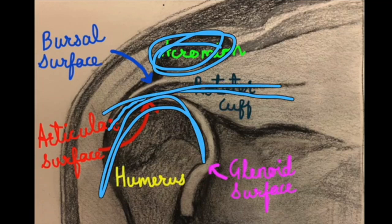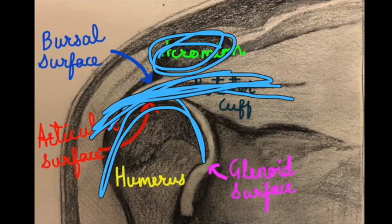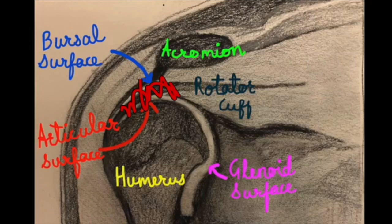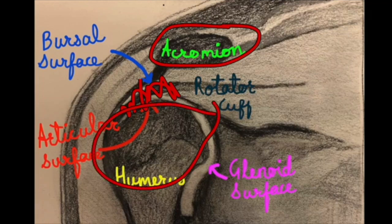And this is the direction of the rotator cuff muscle. Oftentimes the impingement can happen right at this region here, where the muscle is passing in between this really tight space and is compressed between the acromion up top and the humerus below.